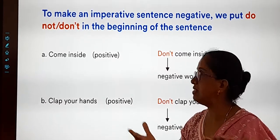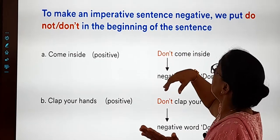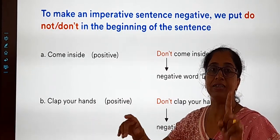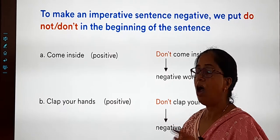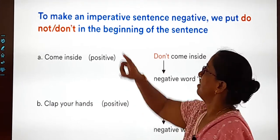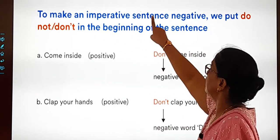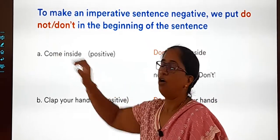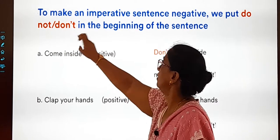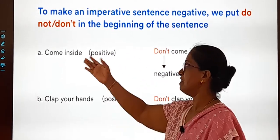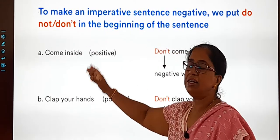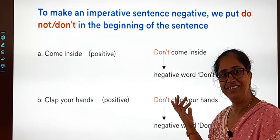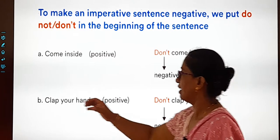What about sentences like 'Come inside', 'Clap your hands'? These are order sentences — command sentences — also called imperative sentences. To make an imperative sentence negative, put 'do not' or 'don't' at the beginning of the sentence. So 'Come inside' becomes 'Don't come inside'.